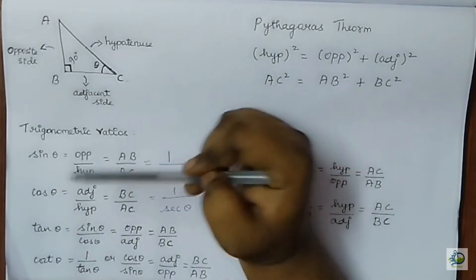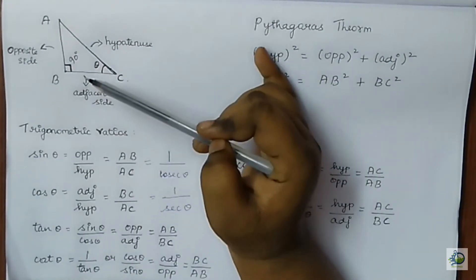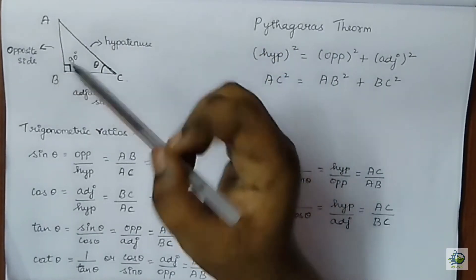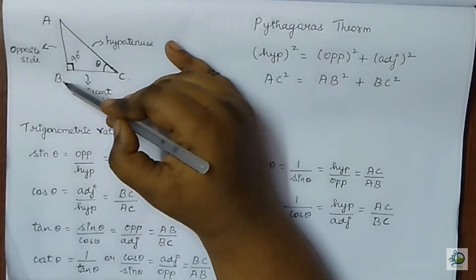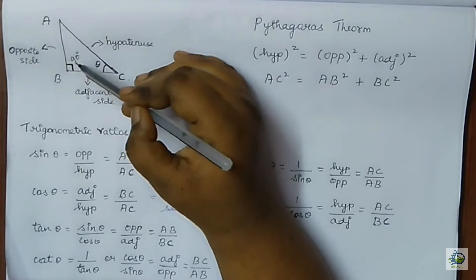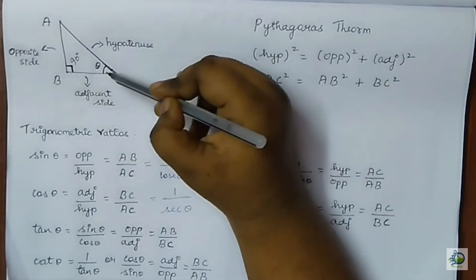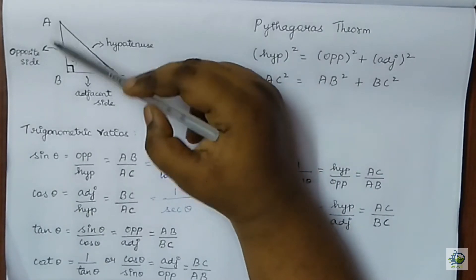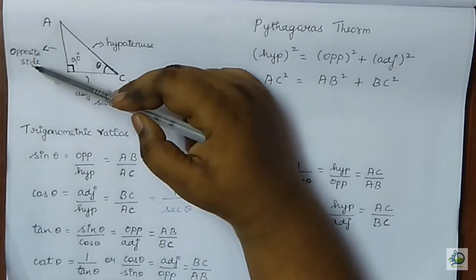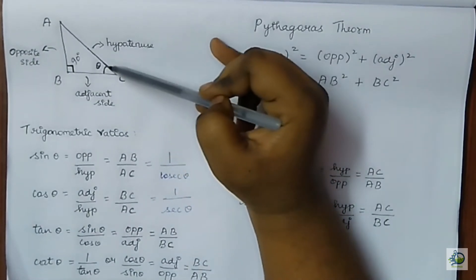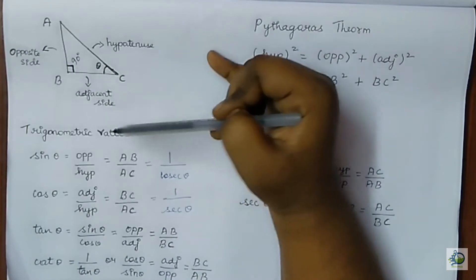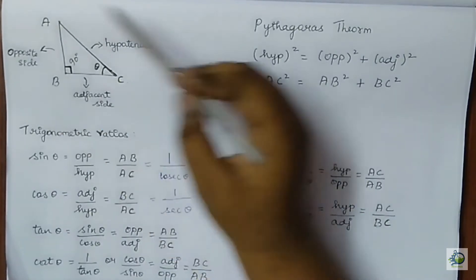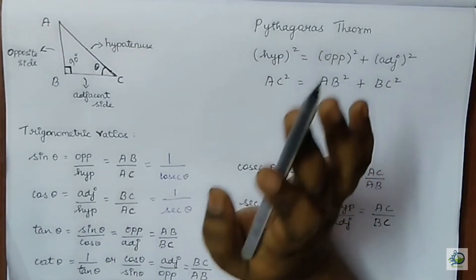Consider a triangle ABC. Our trigonometry is fully dependent on triangles and mainly on right angle triangles. This triangle is right angled at B, meaning the angle is 90 degrees. Let me consider angle C as theta. The side opposite to this angle, AB, is called the opposite side. The side closer to theta is the adjacent side, and the longest side of the triangle is the hypotenuse. This is the very basic thing you need to know in a triangle.